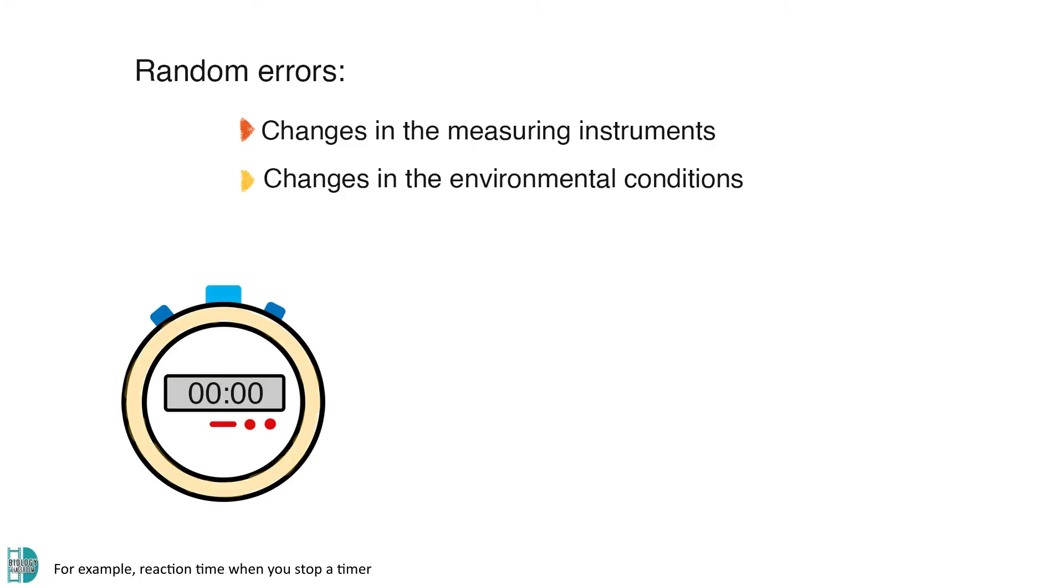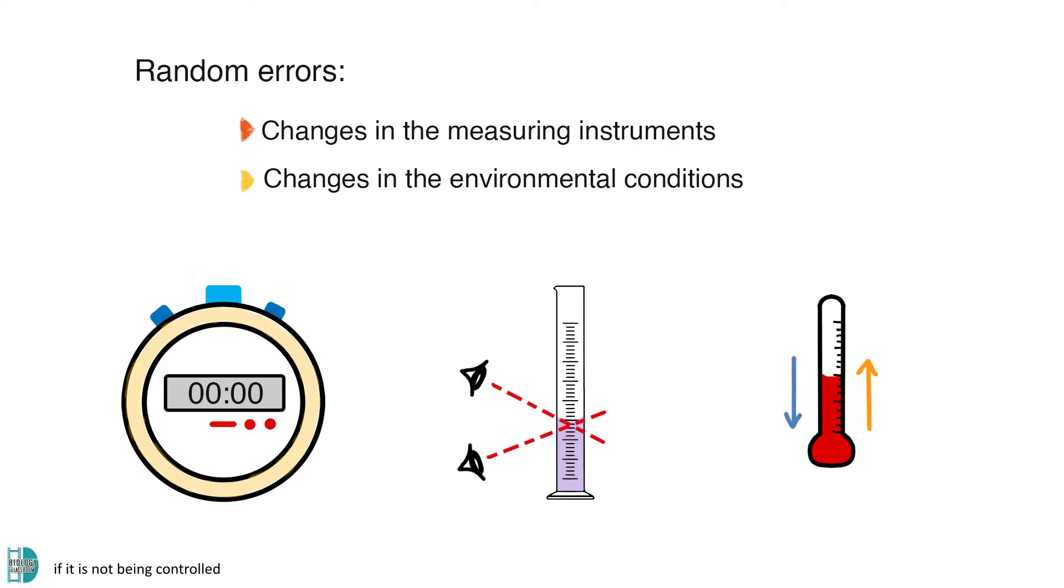For example, reaction time when you stop a timer, parallax error when using a measuring cylinder if you always read from different positions, and the fluctuations of temperature during an enzymatic reaction if it is not being controlled.